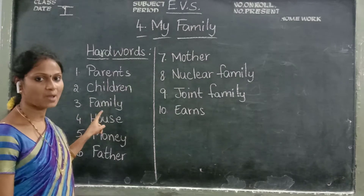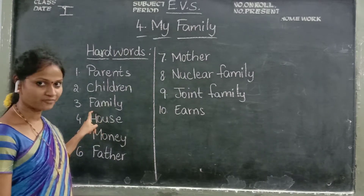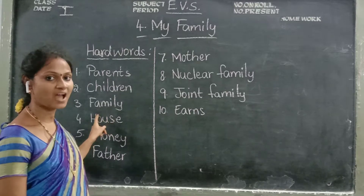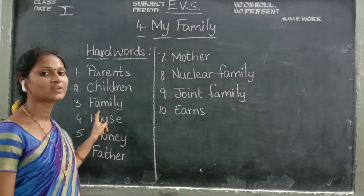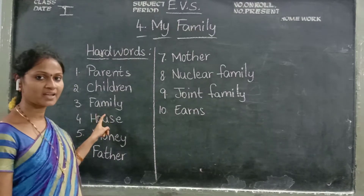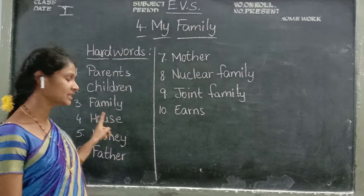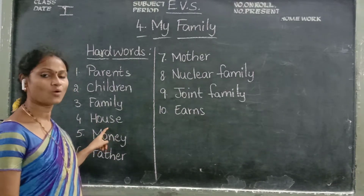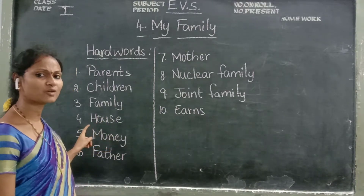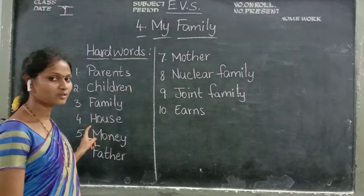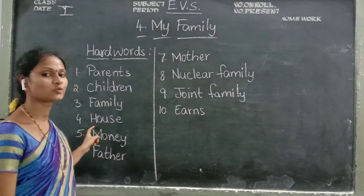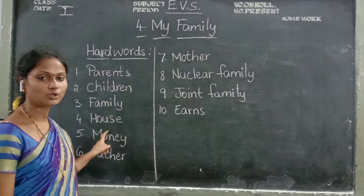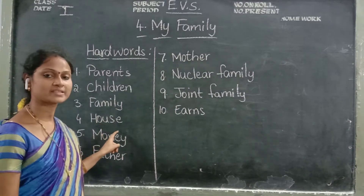Now the third one: family. F-A-M-I-L-Y. Family. F-A-M-I-L-Y. Family. Now the fourth one: house. What is the spelling of house, children? H-O-U-S-E. House. H-O-U-S-E. House.